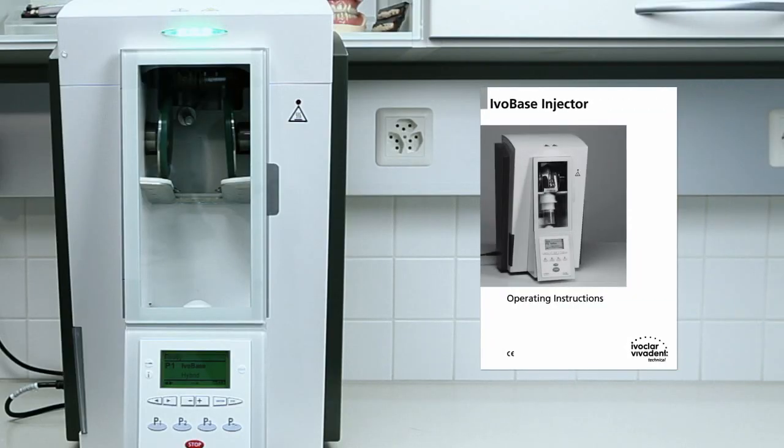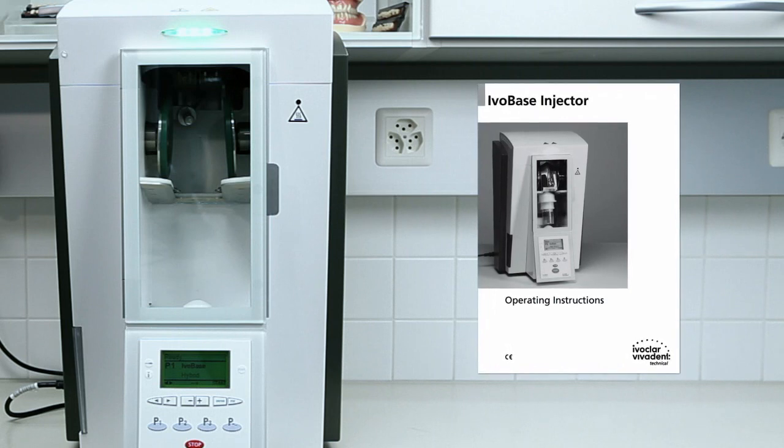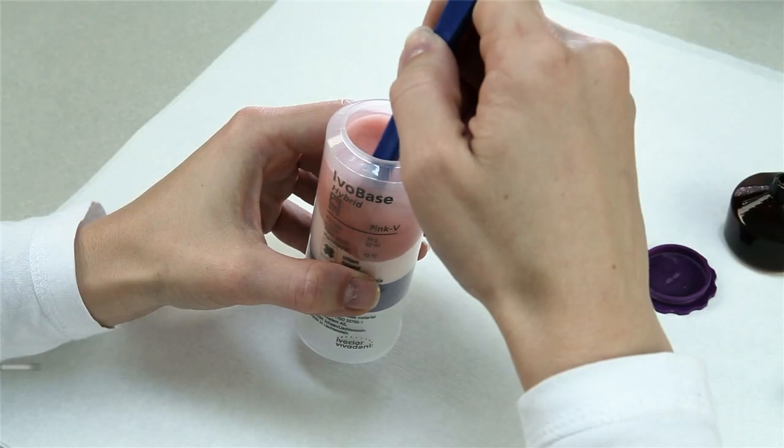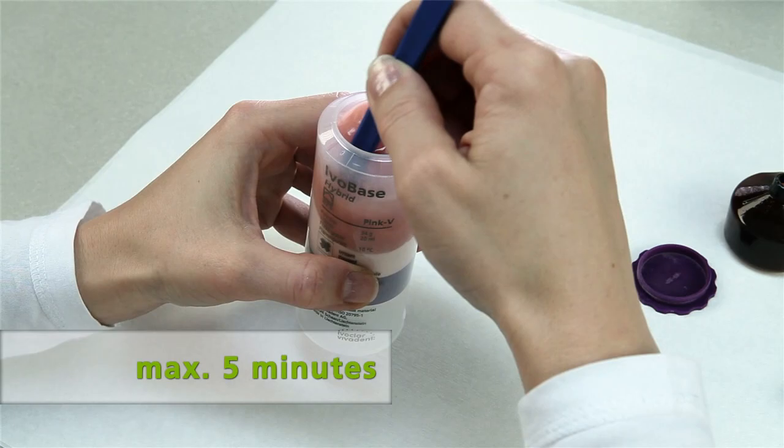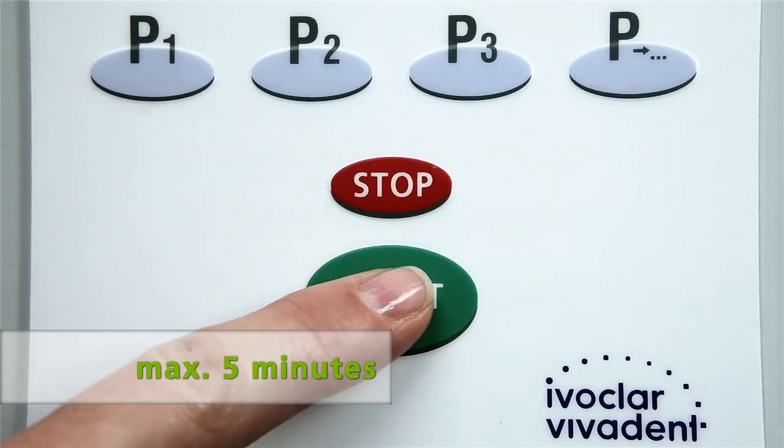The operation of the IvoBase injector is described in detail in the corresponding operating instructions. No more than 5 minutes should pass between mixing the material and the start of the polymerization program.